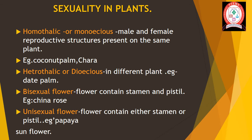Now we will discuss sexuality in plants. In some plants and fungi, male and female reproductive structures may be present on the same plant. Such plants are called homothalic or monoecious. Examples include certain fungi, coconut palm, and Colocasia.